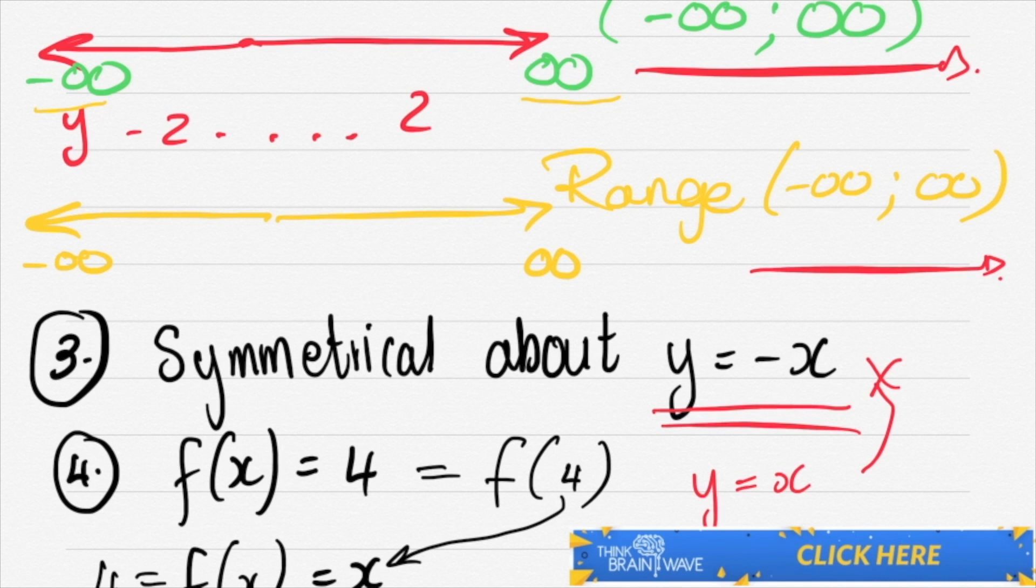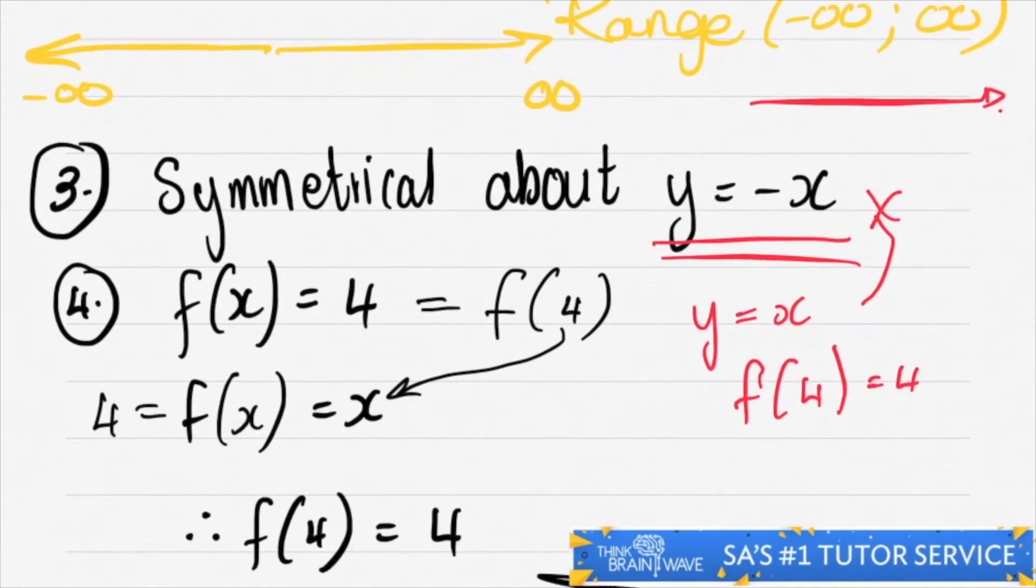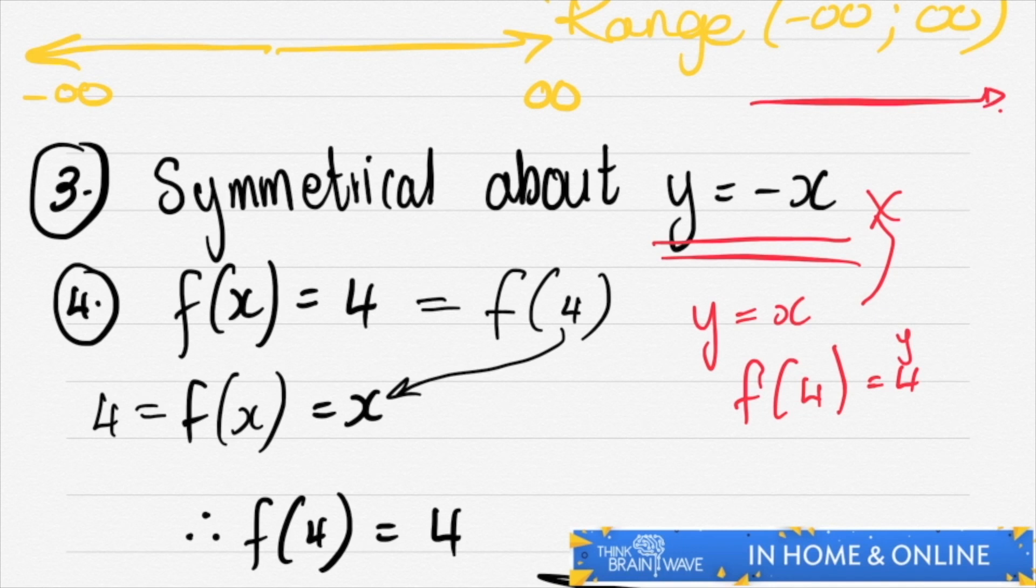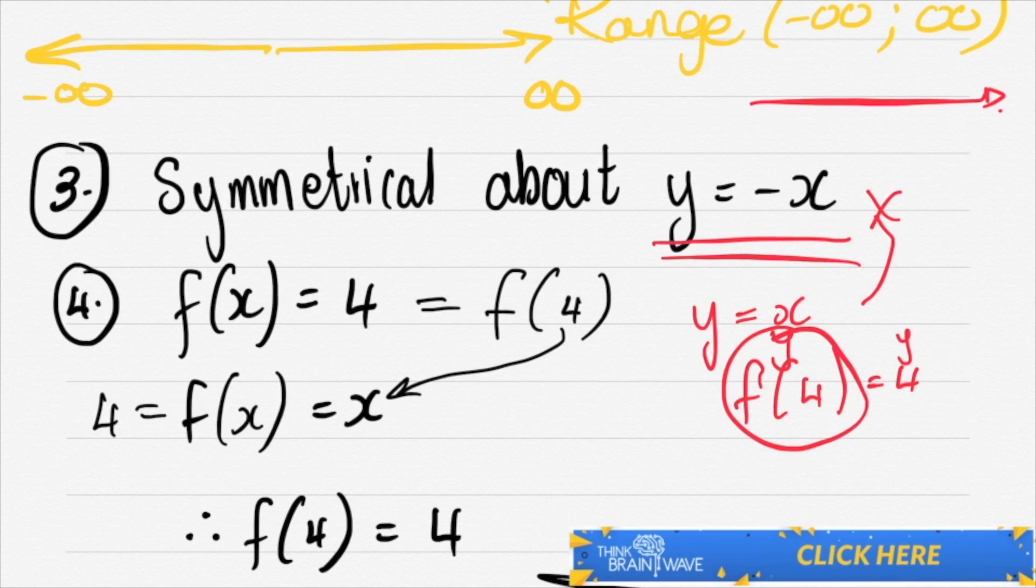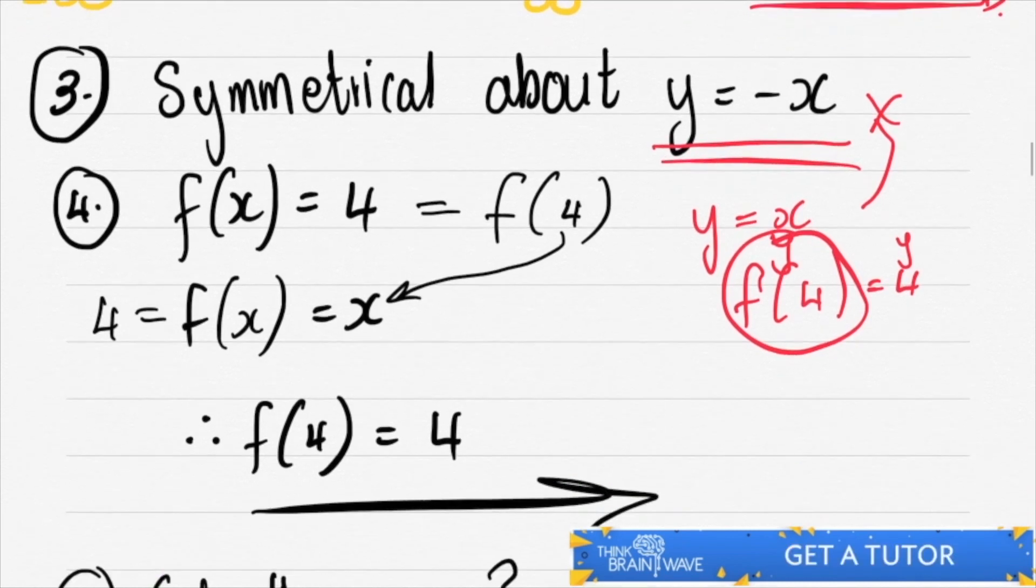So if our function is y is equal to x, then f of 4 is equal to 4 essentially means that this is equal to y and this is equal to y as well over here. It may seem a bit confusing, but just bear with me.